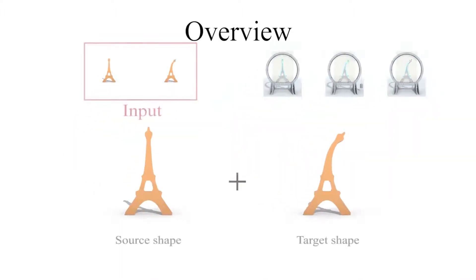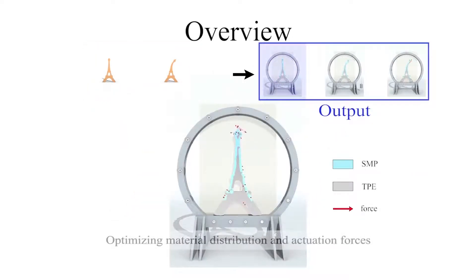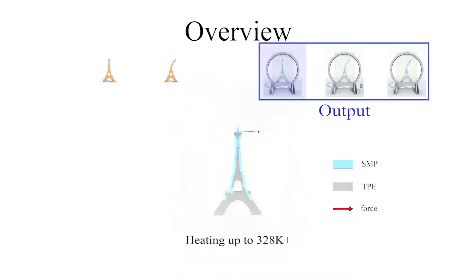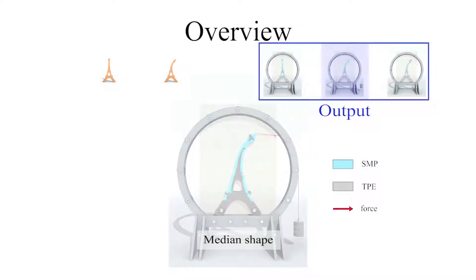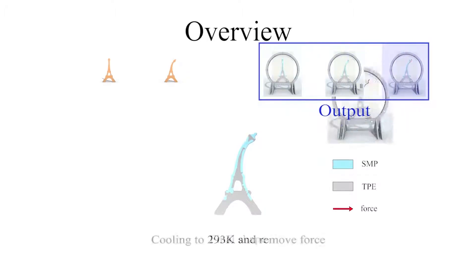Our algorithm takes a source and a target shape as input. We optimize both the material distribution and the actuation forces so that the deformed shape can fit the desired target shape. Instead of explicitly optimizing the actuated forces, we prefer to rely on the median shape to facilitate the computation.